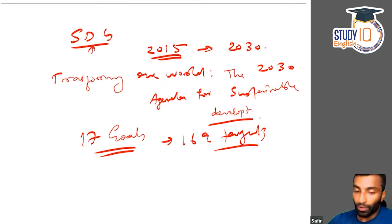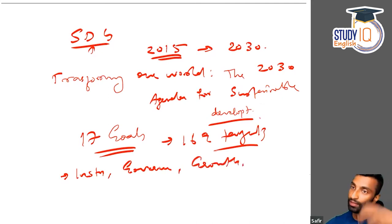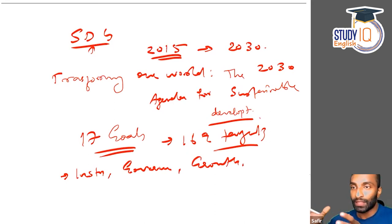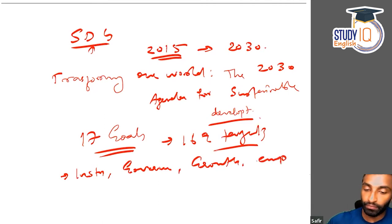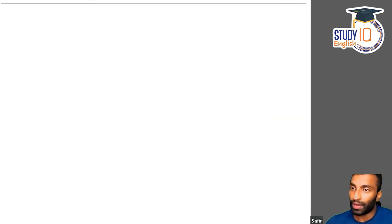Some new dimensions have been included here, like institutions, governance-related aspects, and growth — which you cannot see in the previous MDGs. That is why our planning is now in alignment with Sustainable Development Goals. Other new dimensions include employment, sustainable cities and habitation, and peace and justice. Here, the qualitative aspect is considered more important than the quantitative.